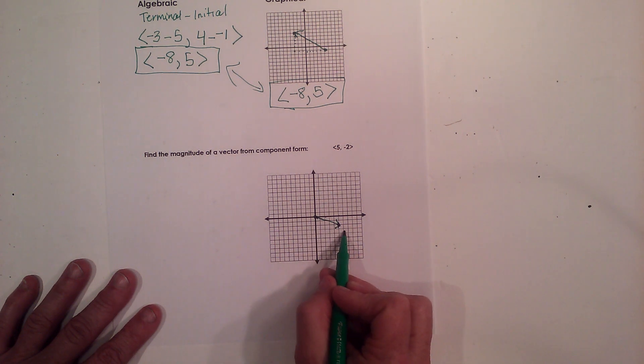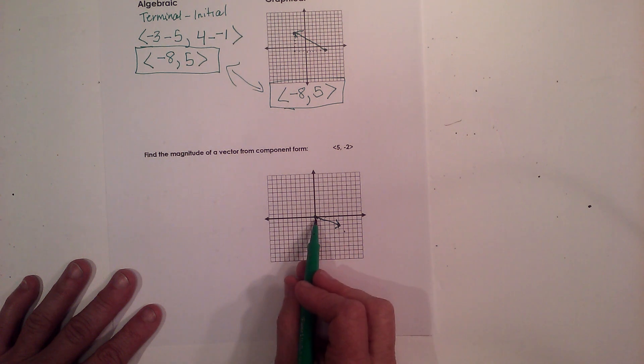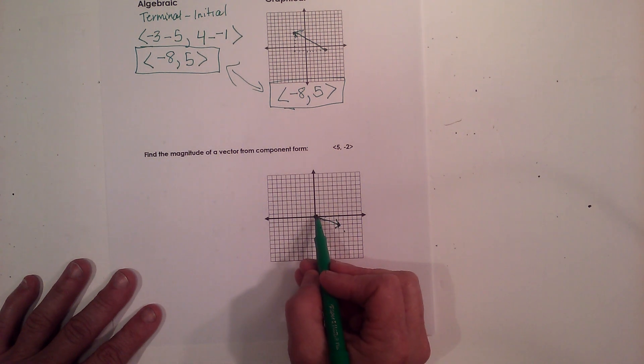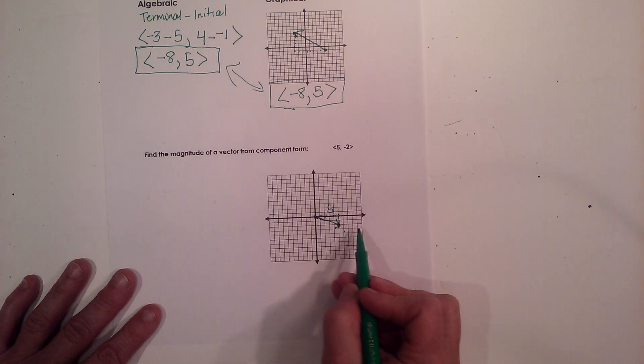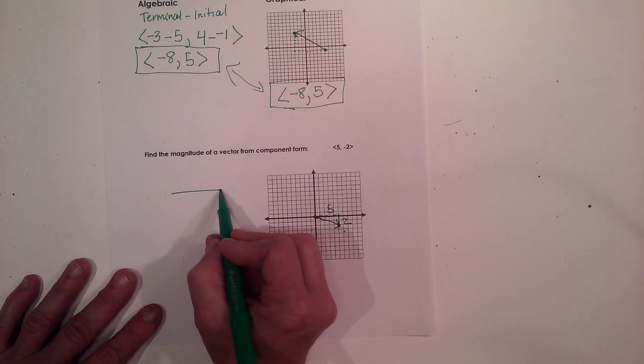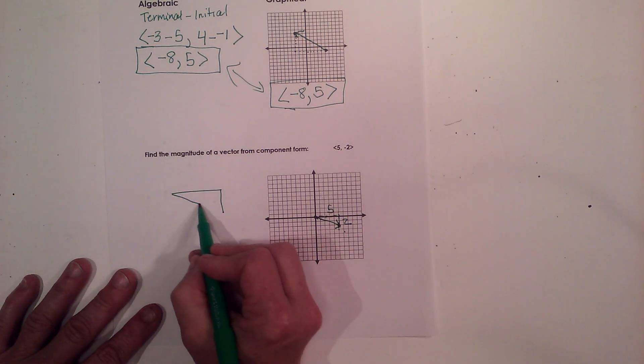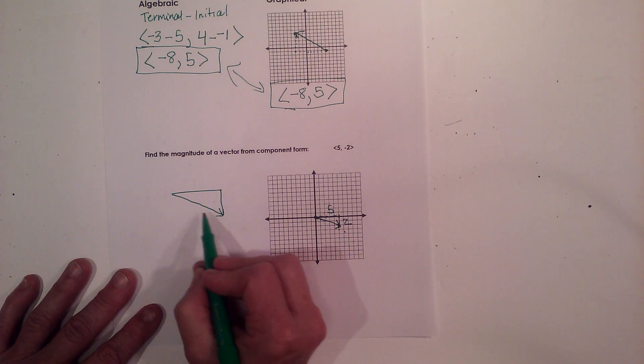So I need to know the length or the magnitude of this vector. Well, what I've just created is a right triangle that's 5 and 2. Now it is negative 2, but I'm just going to isolate the sides of the triangle for a moment and try to find this length.